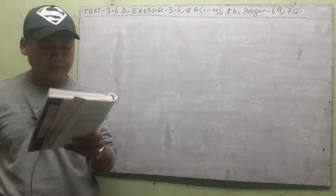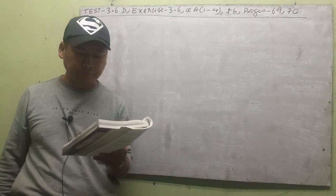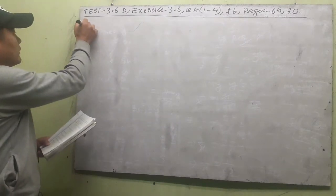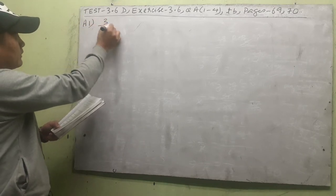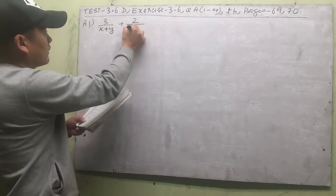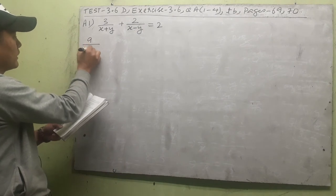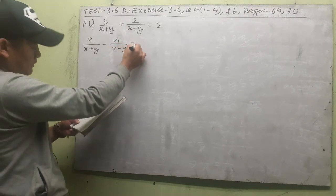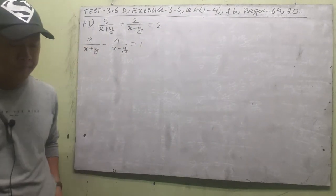For question a1: if 3 by (x+y) plus 2 by (x−y) equals 2, and 9 by (x+y) minus 4 by (x−y) equals 1, then we have to find the right option from the choices below. We are given these two equations and must choose the correct answer.